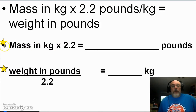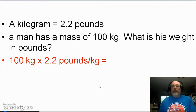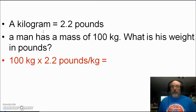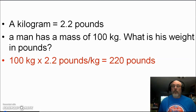Here is a formula to write down: mass in kilograms times 2.2 equals weight in pounds. Or, going the other way, weight in pounds divided by 2.2 equals kilograms. For our original problem, the man's mass is 100 kilograms: 100 kilograms times 2.2 pounds per kilogram equals 220 pounds. So a 100 kilogram man has a weight of 220 pounds.